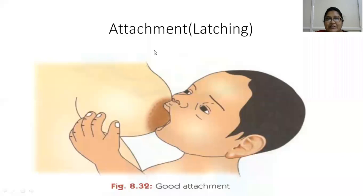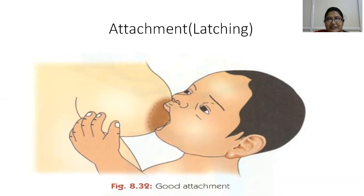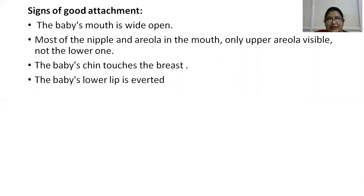Regarding attachment or latching: signs of good attachment are the mouth being widely open, lower lip inverted, chin touching the breast, and only the upper areola visible while the lower areola is not visible. Most of the nipple and areola should be in the mouth — only the upper areola visible, not the lower one, the baby's chin touches the breast, and the baby's lower lip is inverted.